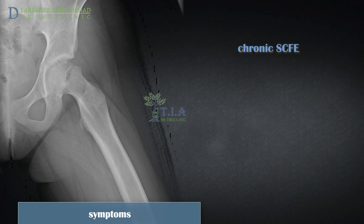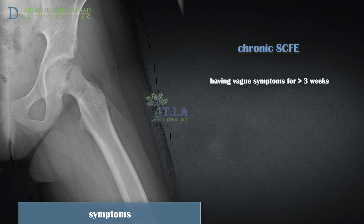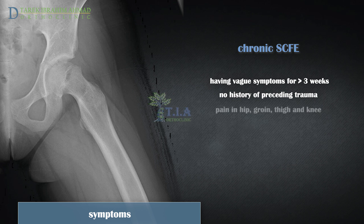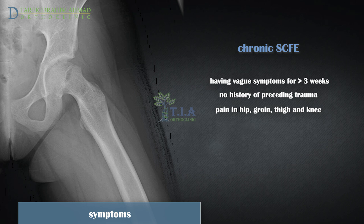Chronic slips is the most common pattern of presentation. It is characterized by vague, intermittent symptoms over a protracted period, usually considered to be longer than three weeks. The classic presentation is a complaint of a dull, aching pain in the hip, groin, thigh, or knee and no history of preceding trauma. The pain may be chronic or intermittent. It is increased by physical activity and relieved with rest.